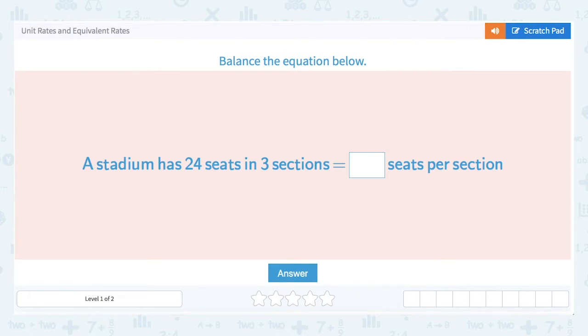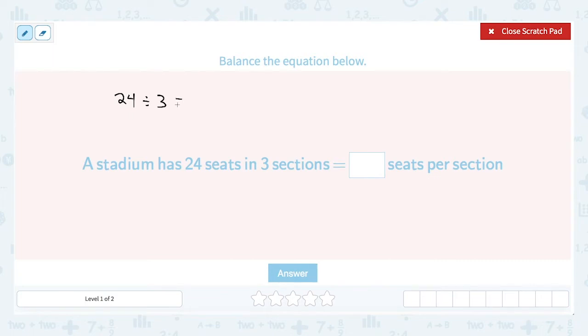So all this is is a division problem. Let's turn on our scratch pad. So if we have 24 seats and we divide those seats evenly into three sections, we get eight seats per section.